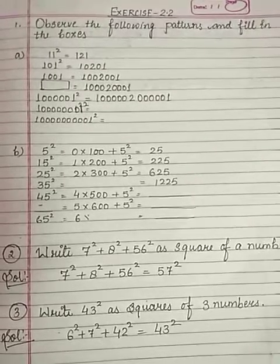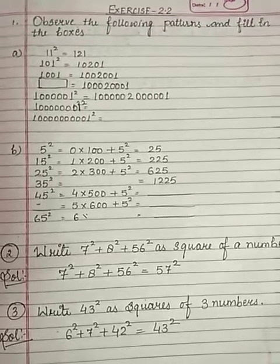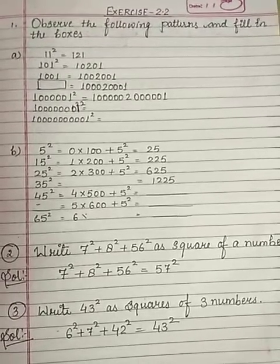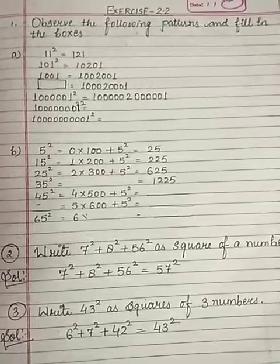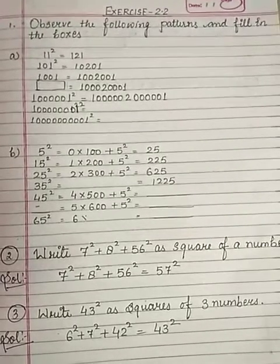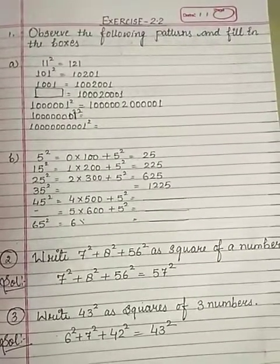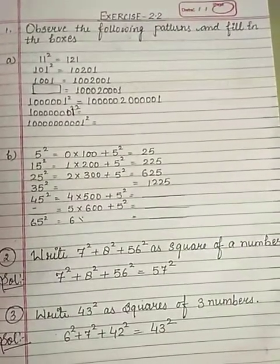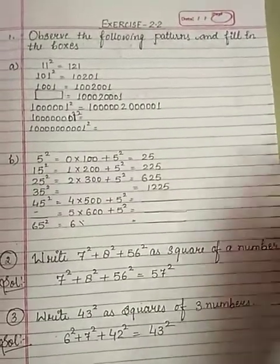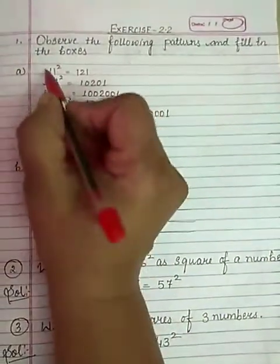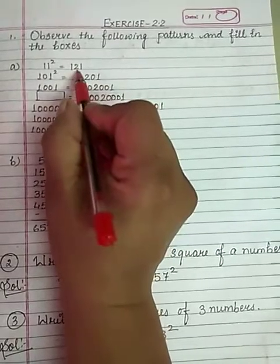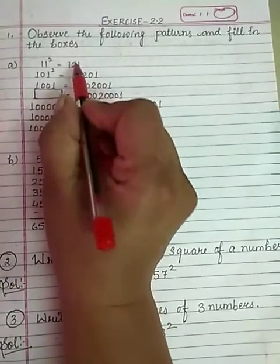Students, today we will start exercise 2.2. This exercise depends on pattern only. First question: observe the following patterns and fill in the boxes. Focus on this pattern: 11 square is equal to 121.